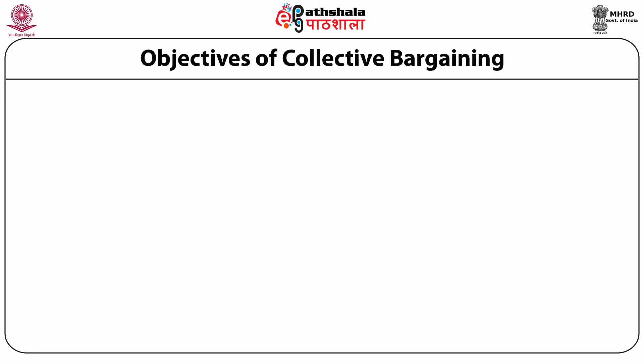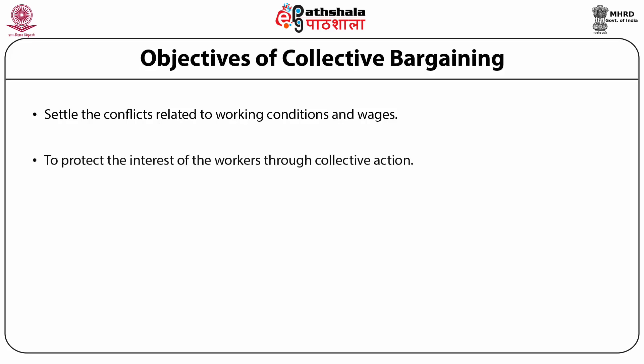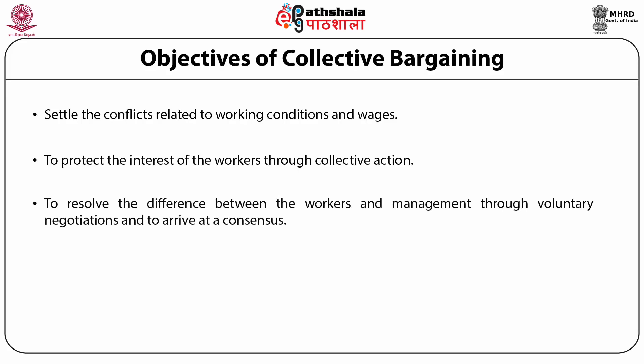Objectives of Collective Bargaining. There are some basic objectives of collective bargaining on the basis of which the whole process generally works. First, settle the conflicts related to working conditions and wages. Second, to protect the interest of the workers through collective action. Third, to resolve the difference between the workers and management through voluntary negotiations and to arrive at a consensus. Fourth, to avoid third-party intervention in matters relating to employment. And fifth, practically speaking, any issue that has any relevance to management and workers becomes the subject matter of bargaining.